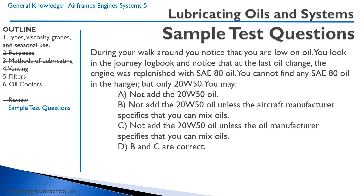Second question: During your walk-around you notice you are low on oil. You check the journey logbook and see the last oil change used SAE 80 oil, but you can only find 20W50 in the hangar. The correct answer is D — both B and C are correct: you may not add the 20W50 oil unless the aircraft manufacturer specifies you can mix oils, and not unless the oil manufacturer also specifies that you can mix oils. This concludes the lesson on lubricating oils — thanks for joining, and we'll see you in the next lesson.